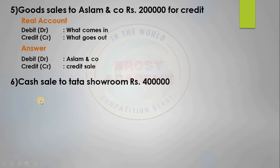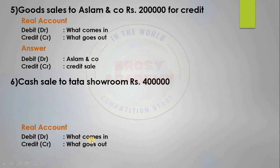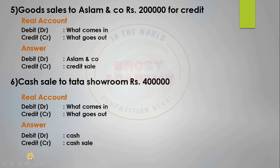Sixth question: Cash sale to Tata. This is a real account. The real account rule is what comes in, what goes out. Debit is cash — cash comes in. Credit is sale — goods go out. So the answer: debit cash, credit sale.